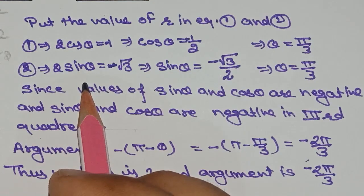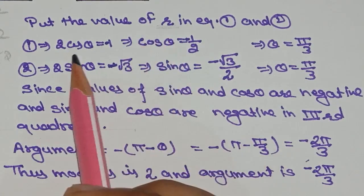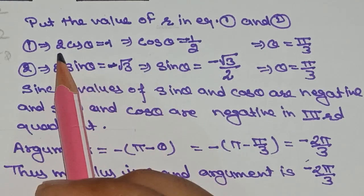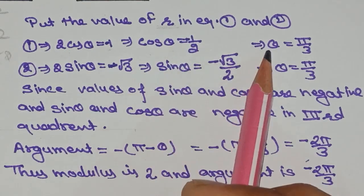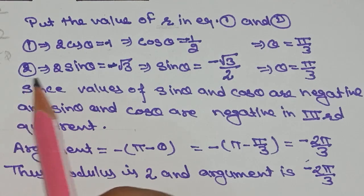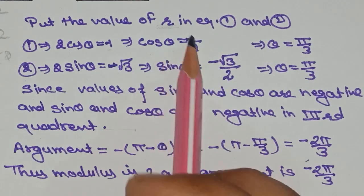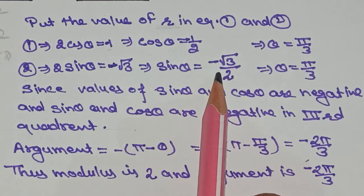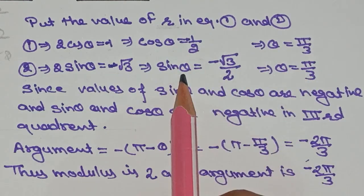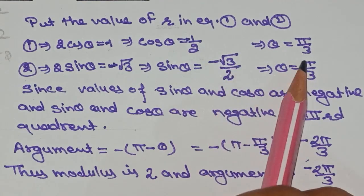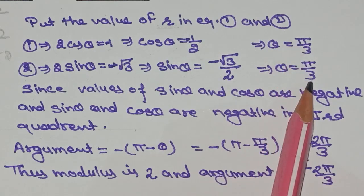Next we find the argument. We substitute r = 2 into equation 1: 2 cos θ = −1, so cos θ = −1/2. From equation 2: 2 sin θ = −√3, so sin θ = −√3/2. Ignoring the signs first: cos θ = 1/2 corresponds to π/3, and sin θ = √3/2 also corresponds to π/3. So the reference angle θ = π/3.